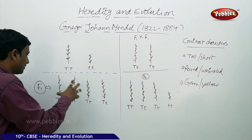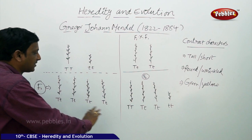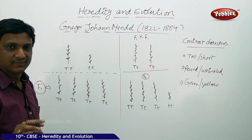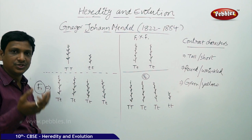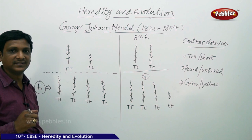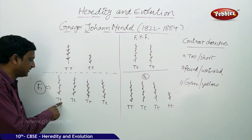In the first progeny, what is observed? All the plants are tall. But let us look at their genes and see whether both genes are expressing tallness or not. No — one gene is expressing the tall trait, the other one is expressing short. But the plant looks tall because tall is the dominant character.